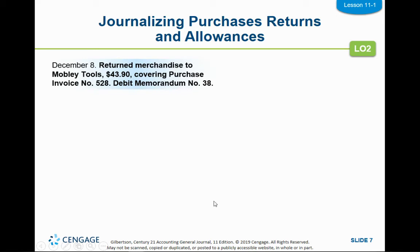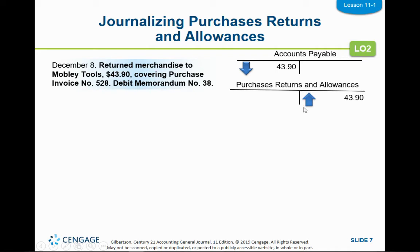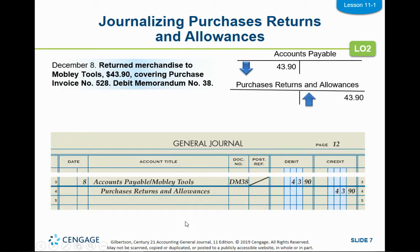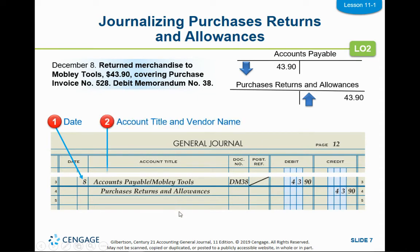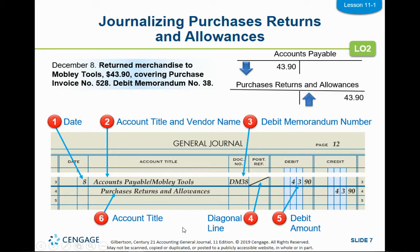To journalize that, you're going to decrease accounts payable because what you owe Mobley Tools has gone down, and you're going to increase purchases returns and allowances. So your debit of accounts payable goes on the first line, and just like when we recorded the credit to accounts payable, you have to write accounts payable slash the name of the vendor so that we post it to accounts payable in the general ledger and to Mobley Tools in the accounts payable ledger. The debit memo is abbreviated DM with the number. You do the diagonal line and the amount, and then the credit is purchases returns and allowances.